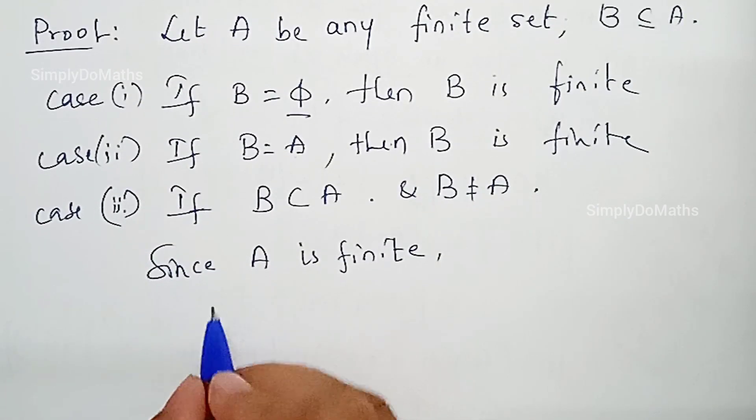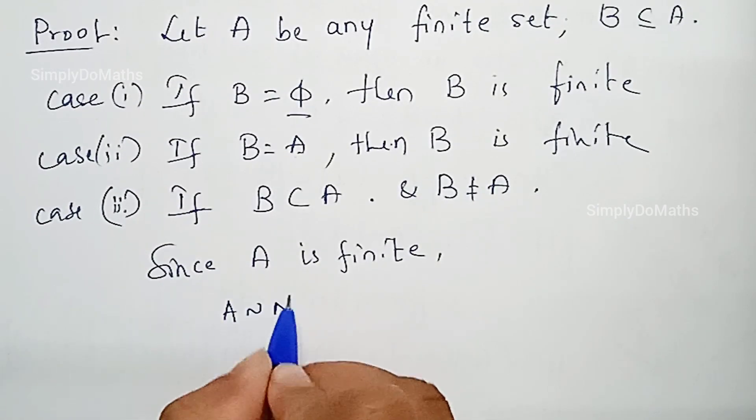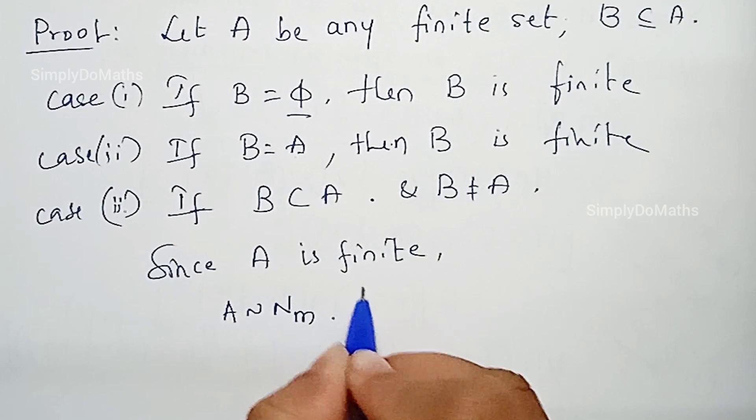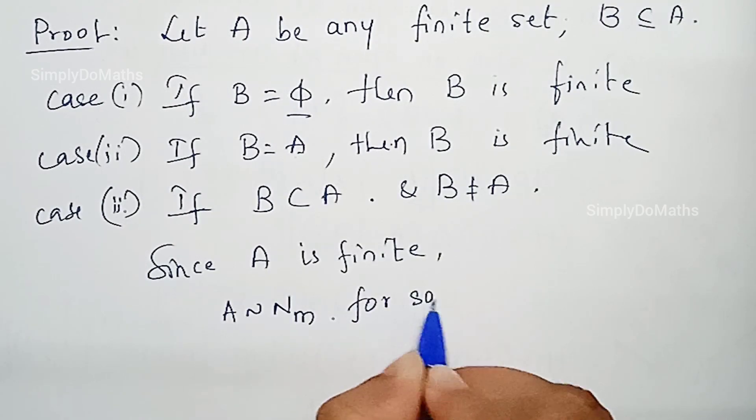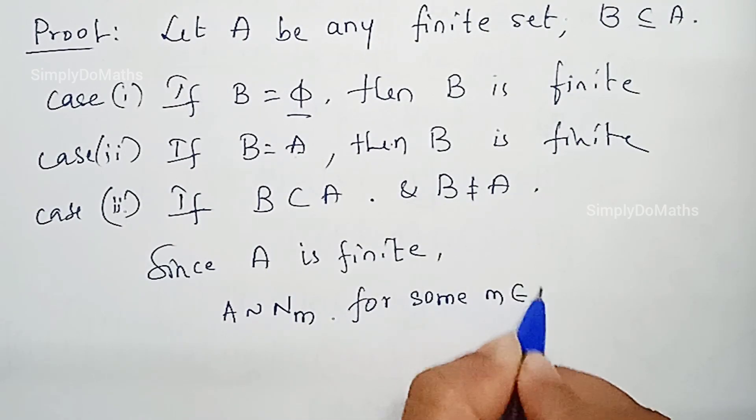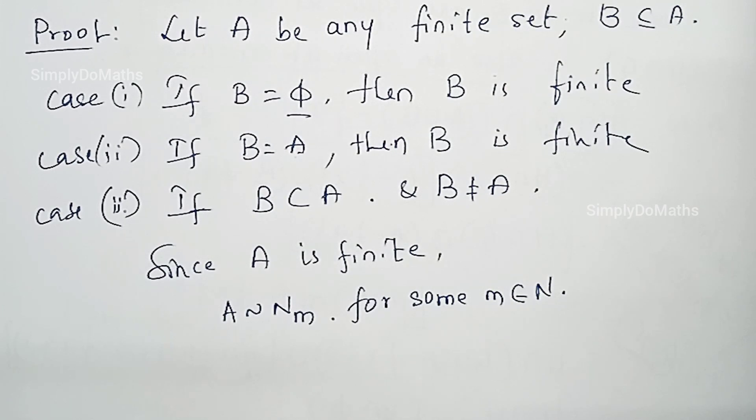we can write A is equivalent to N_m for some m belonging to N. That is, we know that the set of natural numbers is infinite, but still we have taken up to m elements. A is equivalent to N_m.